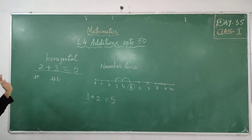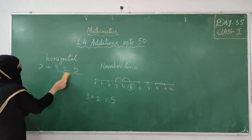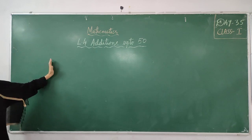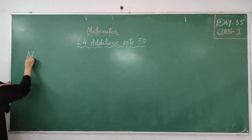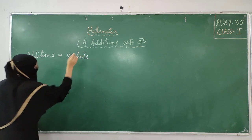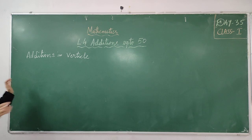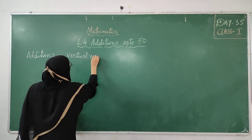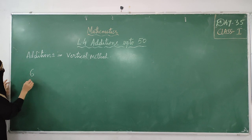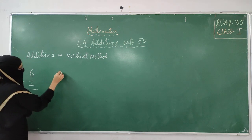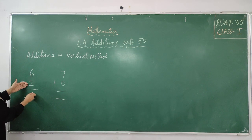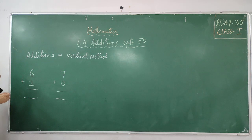We studied additions in the horizontal way and number line. Today we are going to study additions in vertical. Horizontal is one beside the other. Vertical is one under the other — one number placed below the other. This is vertical additions, the additions in vertical method.